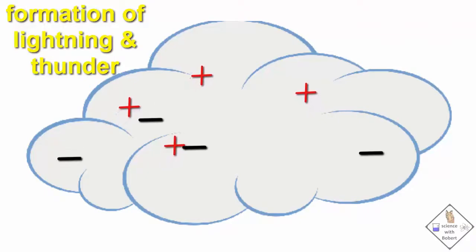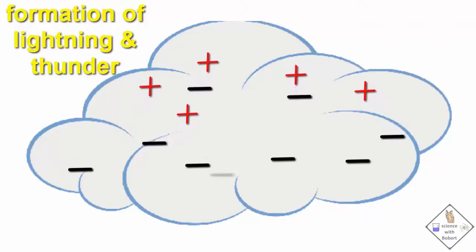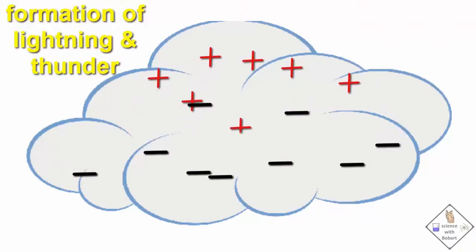Inside a storm cloud, there are a lot of collisions occurring between small bits of ice, and this generates a lot of static electricity.